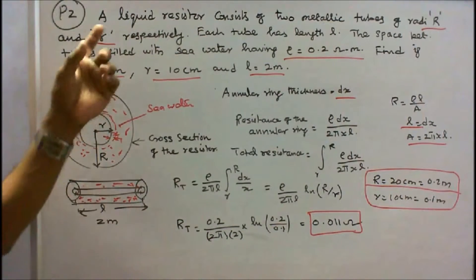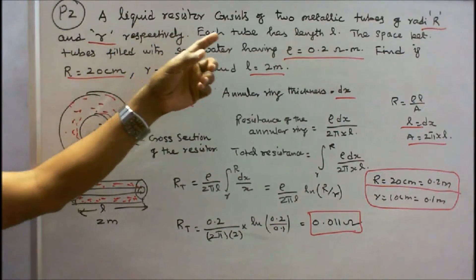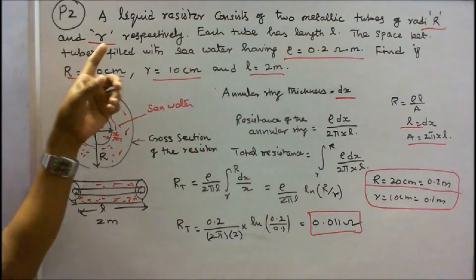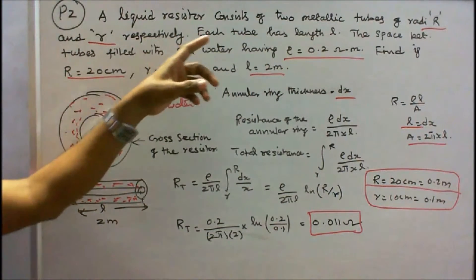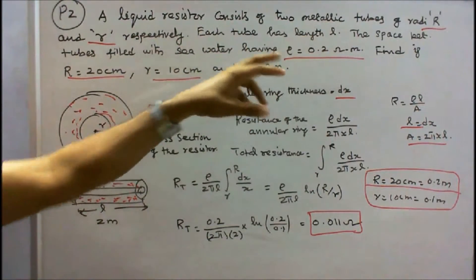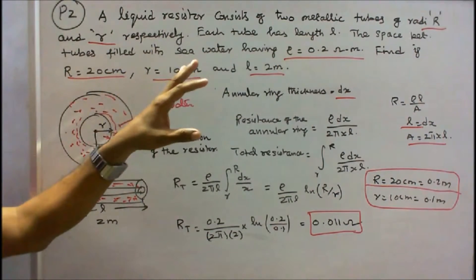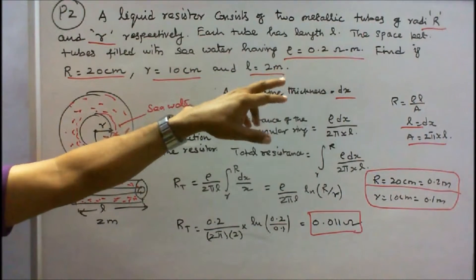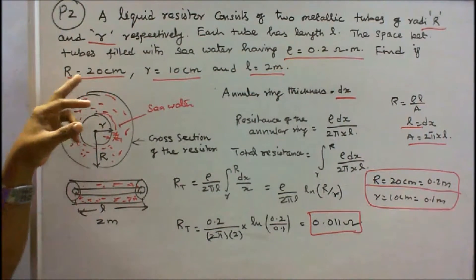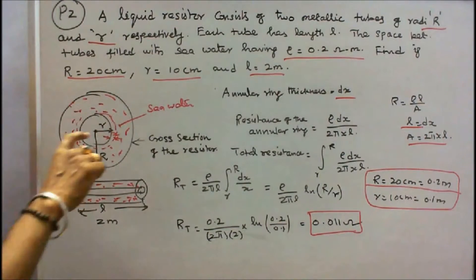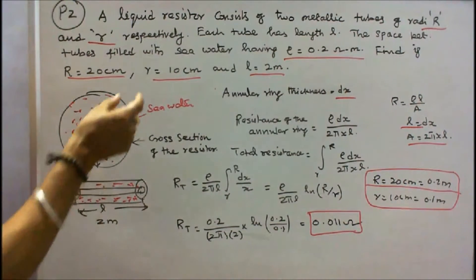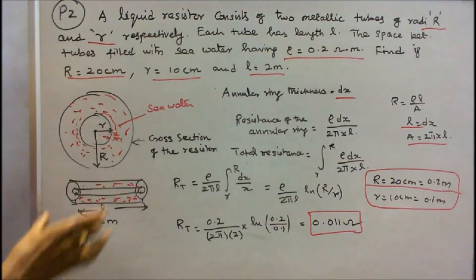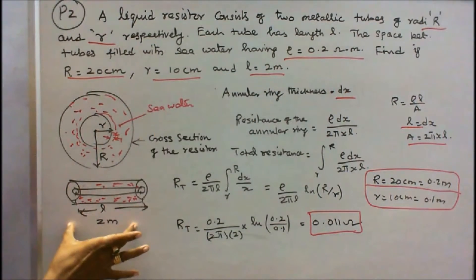Problem number two: a liquid resistor consists of two metallic tubes of radii capital R and small r respectively, each with length L. The space between the tubes is filled with sea water having a resistivity of 0.2 ohm-meter. Given: capital R = 20 cm, small r = 10 cm, and length = 2 meters.